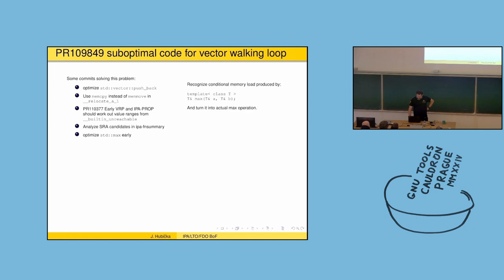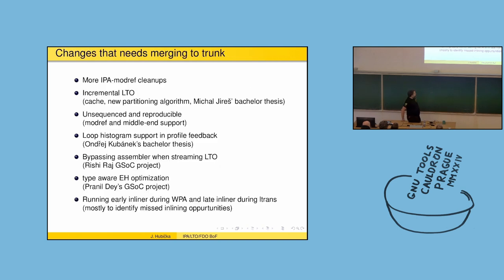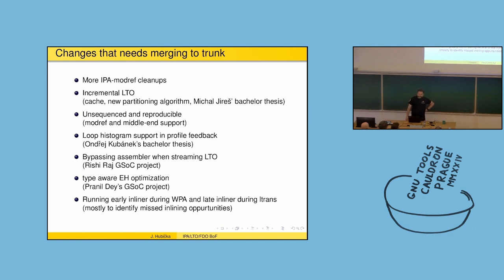I have a slide from the previous GCC dev meeting showing we made a lot of commits. For trunk I have a lot of things on my table. I had a busy summer — I was hacking but not merging. There are some more draft cleanups I think are necessary. Michal Resch has nice work on incremental LTO with interesting cleanups. Ondra has loop histogram support, useful for the vectorizer to do better prologues and epilogues. We also have two Summer of Code students who need some cleanups and finishing of their implementations.